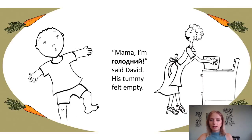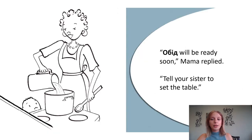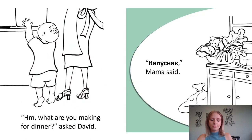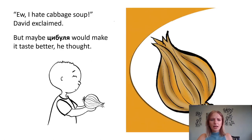"Mama, I'm golodny," said David. His tummy felt empty. "Well, beesh will be ready soon," Mama replied. "Tell your sister to set the table." "Hmm, what are you making for dinner?" asked David. "Kapusnyak," Mama said. "Ew, I hate cabbage soup," David exclaimed. "But maybe tsibulia would make it taste better," he thought.